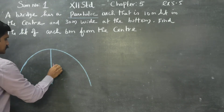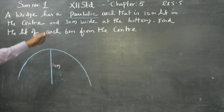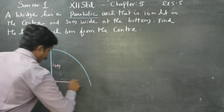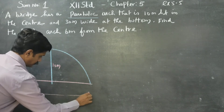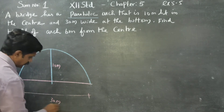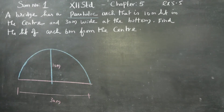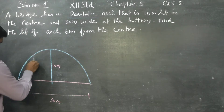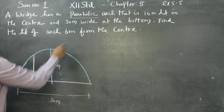The arch is 10 meters height in the center and 30 meters wide at the bottom. Find the height of the arch 6 meters from the center.